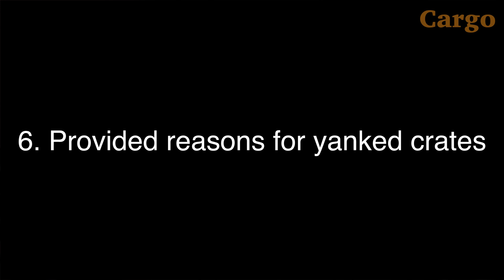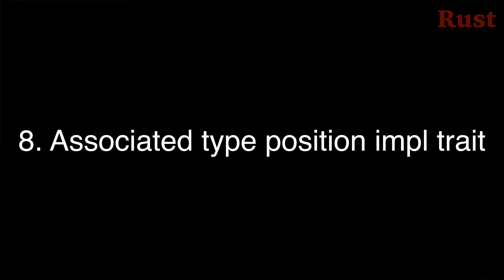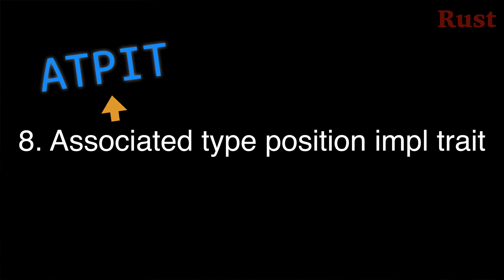Project 6 adds support in crates.io to receive and display a reason for a crate being yanked, and adds a way in cargo to provide this reason. Project 7 is the meta project to track the 26 projects and improve the project process itself. Project 8 adds stable support for impl trait in the values of associated types — also known as associated type position impl trait, or ATPIT.